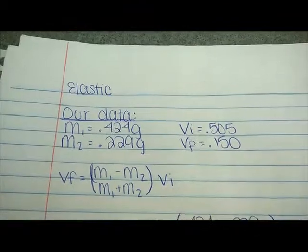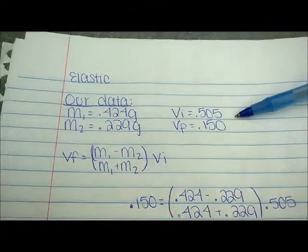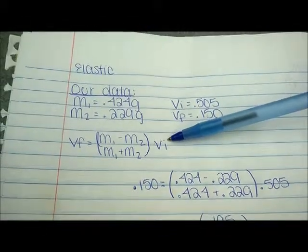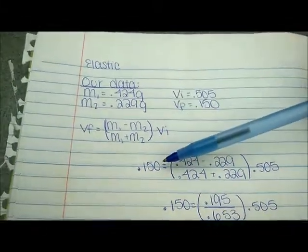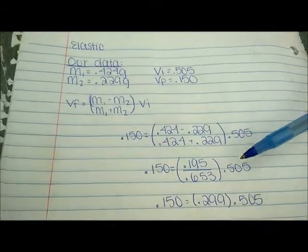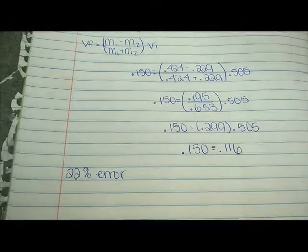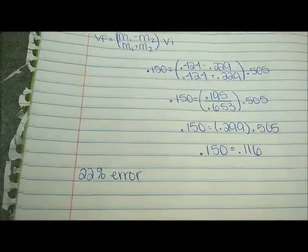This is the elastic equation for the bigger cart hitting the little cart, and this is our data. This is the equation, and I plugged in the velocity final, the velocity initial, and the masses of the carts. As a result, I got 0.116, which is a 22% error.